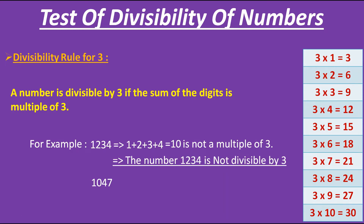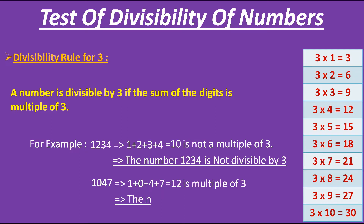Now let's check the second example. Let's add the digits: 1 + 0 + 4 + 7 gives us the answer as 12, which is a multiple of 3. Therefore, the number 1047 is divisible by 3.